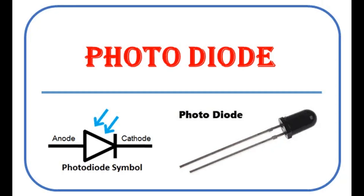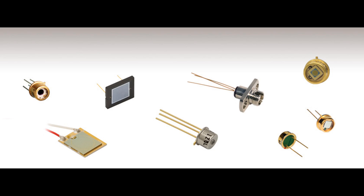Consumer electronics: Photodiodes in remote controls detect infrared signals from the transmitter, enabling wireless control of devices like TVs and air conditioners. In CD, DVD, and Blu-ray players, photodiodes read data encoded in optical disks by detecting reflected laser light. Camera light meters use photodiodes to measure ambient light levels and adjust exposure settings.